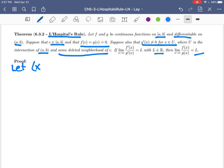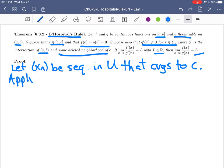Let (x_n) be a sequence in U that converges to c. Then we can apply the Cauchy mean value theorem to f and g on the intervals.